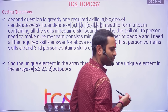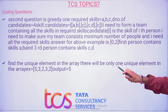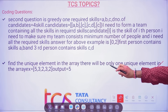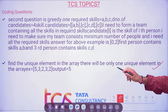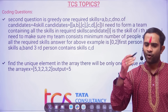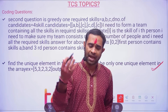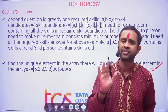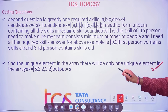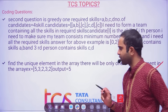There were two coding questions in the second shift. The first coding question was: find the unique element in the array — there will be only one unique element. For example, array X = [5, 3, 2, 3, 2], output is 5. The first question is always easy. However, there was a compiler issue which many students were facing and nobody was able to pass all the test cases.